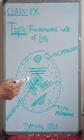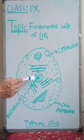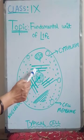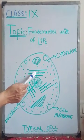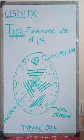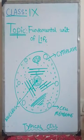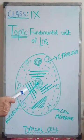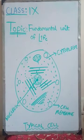The next organelle we are going to discuss is endoplasmic reticulum. There are two types of endoplasmic reticulum: smooth endoplasmic reticulum and rough endoplasmic reticulum. The roughness of the endoplasmic reticulum is caused by the presence of ribosomes. The function of rough endoplasmic reticulum is to synthesize protein, whereas the function of smooth endoplasmic reticulum is to synthesize lipid.